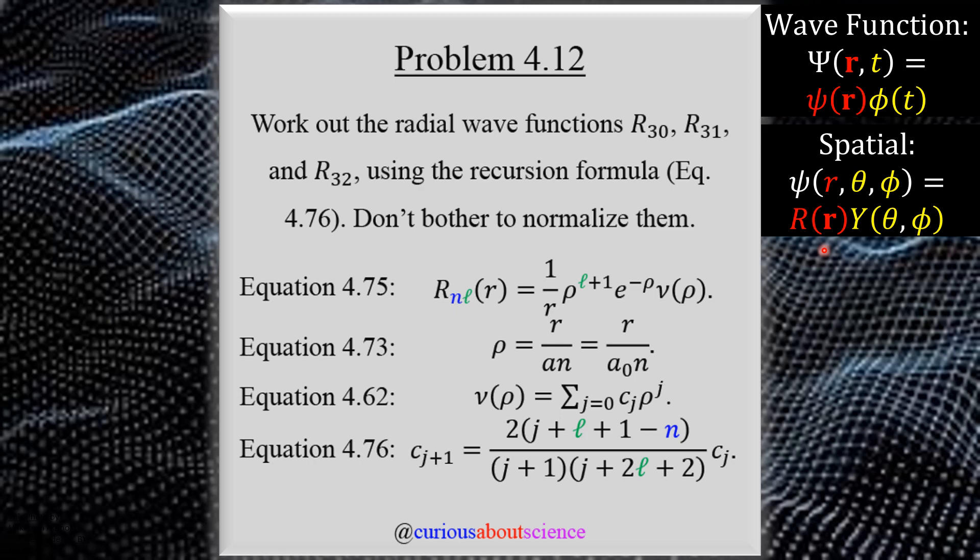So in reading this, we want to work out the radial wave functions R_30, R_31, and R_32, using the recursion formula equation 4.76. And don't bother to normalize them. This has given us flashbacks to the Hermite polynomials of chapter 2, with the asymptotic behavior and polynomial solutions, as we see is put together in this radial configuration, where the exponential is the asymptotic form, and the polynomial solution gives us everything in the transients.